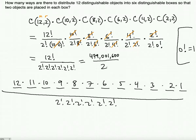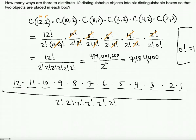Since 2! = 2×1 = 2, we're dividing by 2^6. Dividing 479,001,600 by 2^6 gives 7,484,400. So there are 7,484,400 ways to distribute 12 distinguishable objects into six distinguishable boxes so that exactly two objects are placed in each box.